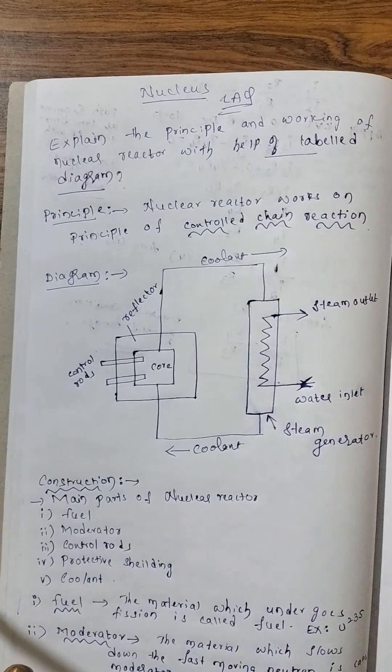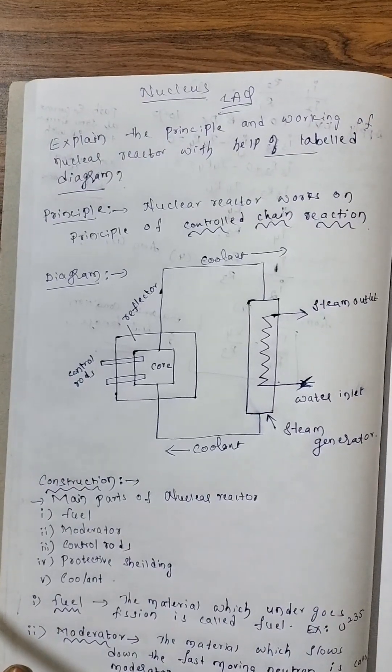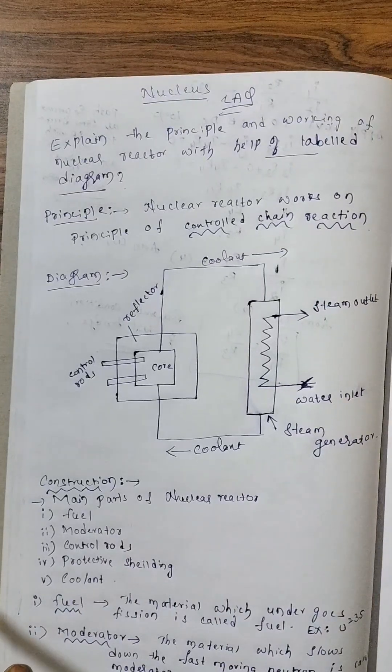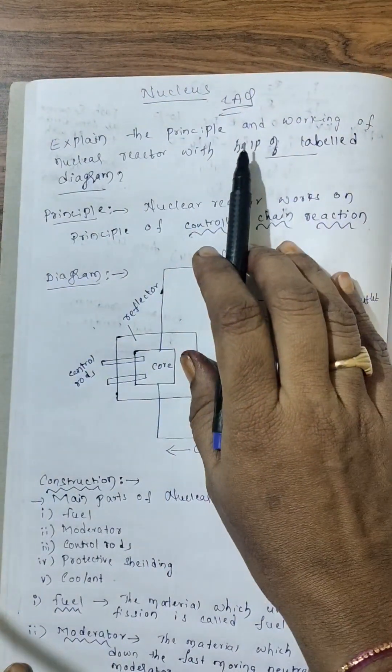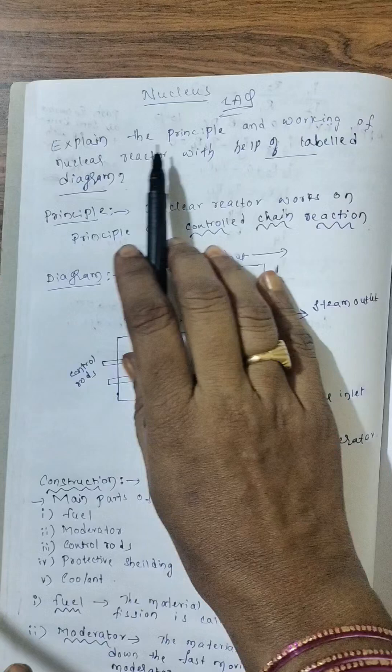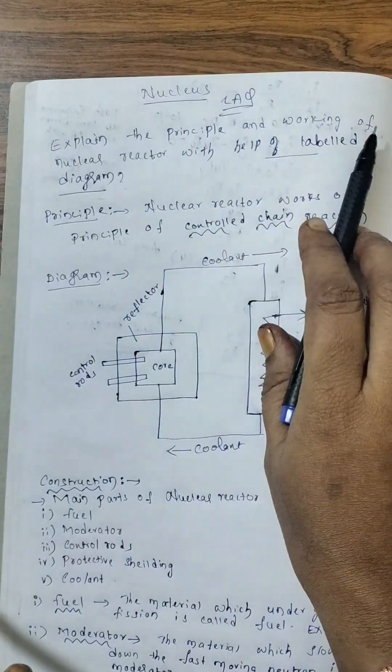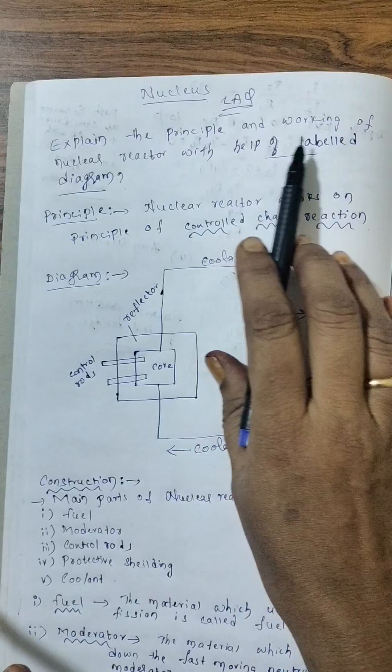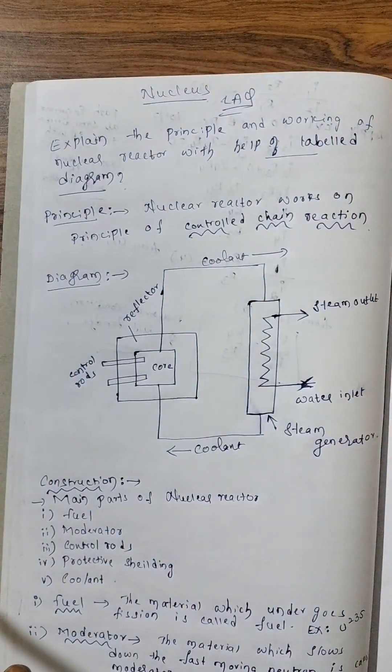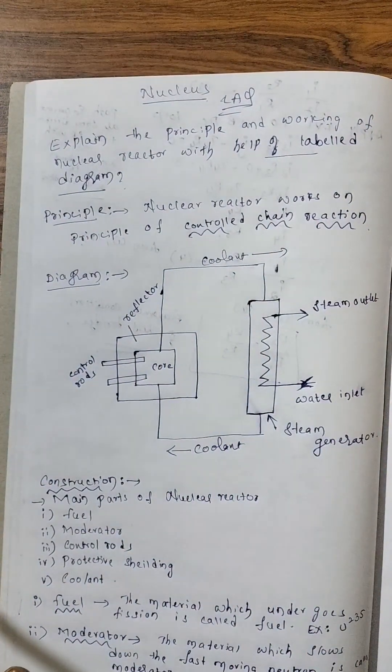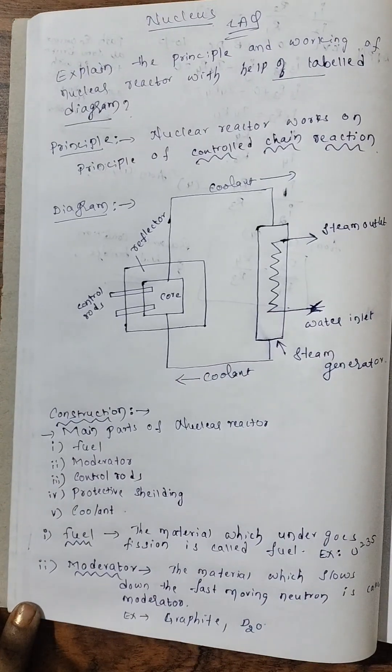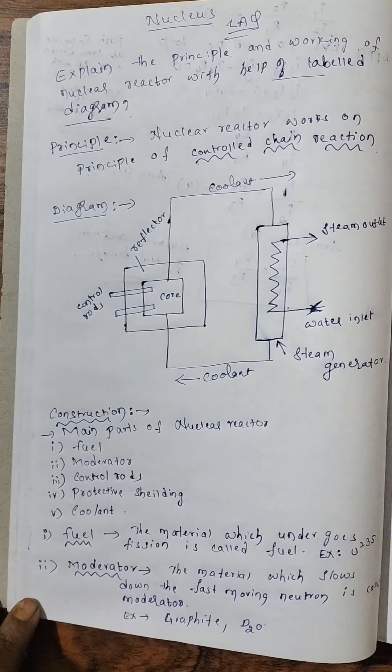Hello students, in this video, let us discuss the next long answer question from nuclei chapter. Explain the principle and working of nuclear reactor with help of labeled diagram. He already mentioned labeled diagram, so compulsory you have to learn the diagram. Diagram carries marks.